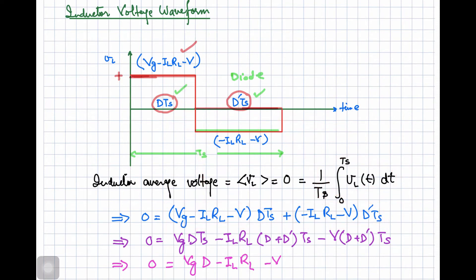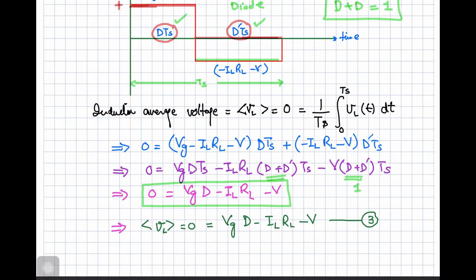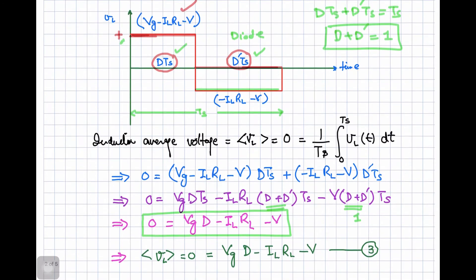Simplifying the equation, since D·Ts plus D'·Ts equals Ts, we know D plus D' equals one. Using this, we get the volt-second balance equation. This is called the volt-second product because on one axis we have voltage and on the other we have time, and this area under the curve must equal zero for steady state.